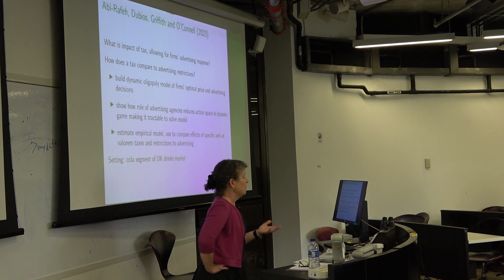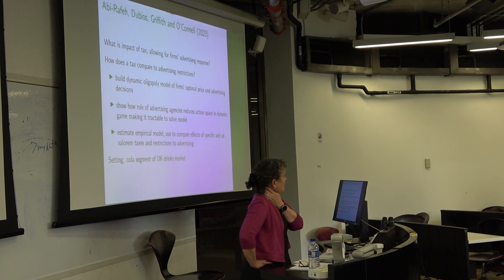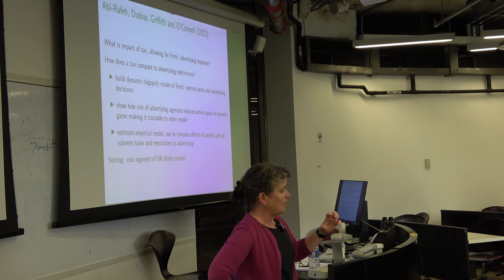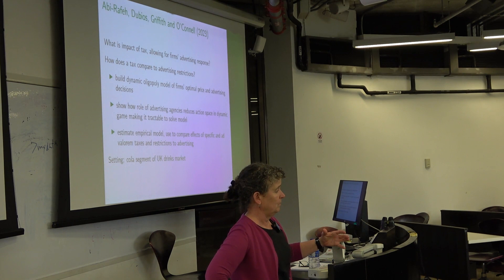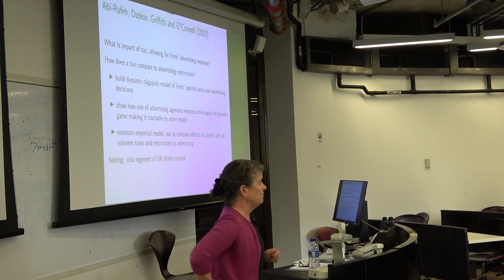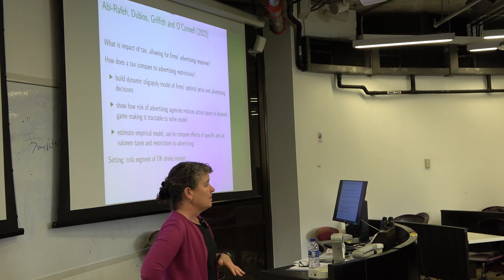We're going to write down a dynamic oligopoly model, similar to what we wrote down before with a few different features. Advertising enters in a slightly different way because of the different nature of the product. The data we have is individual-level ad data — firms face a potentially dynamic problem of choosing when to show ads. Coke and Pepsi place roughly a million adverts over the couple of years we consider. If you write the full dynamic problem out, firms are deciding a million different choices about exactly when to show an ad — that problem is completely intractable.